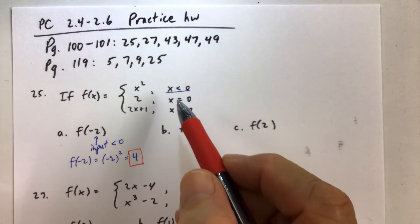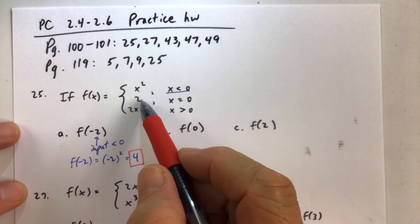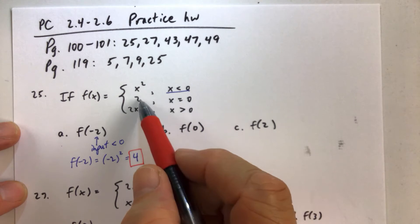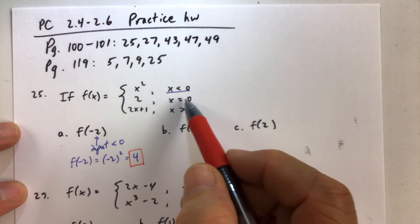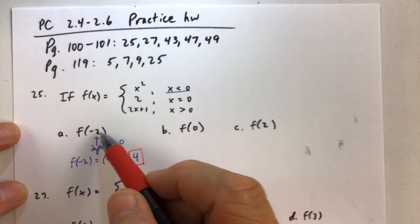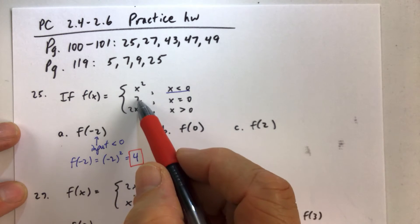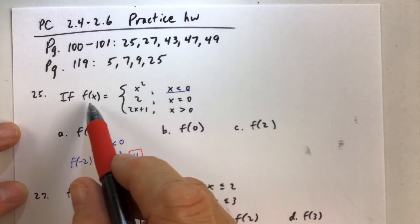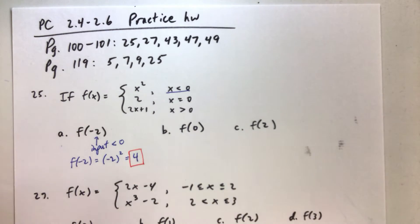If you replaced x with negative 2 in the second piece, there's no x in there. So no matter what, if x is equal to 0, if the input is 0, like this one, the output would be 2. So it's all about inputs and outputs. That's exactly what we want to look at here.